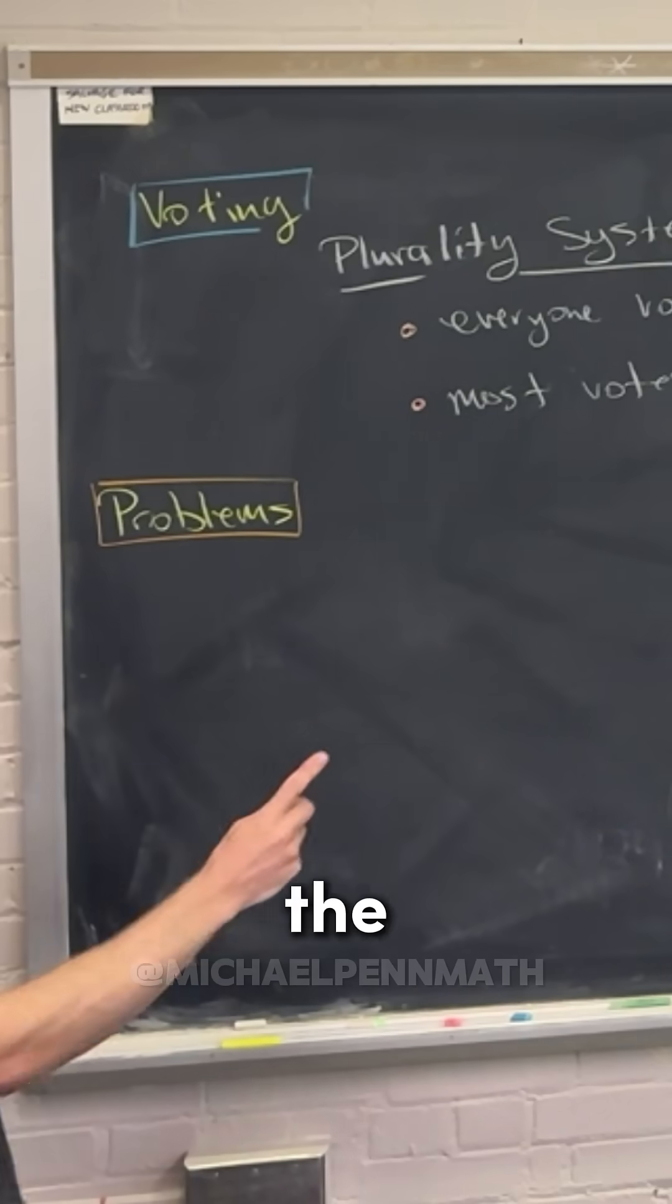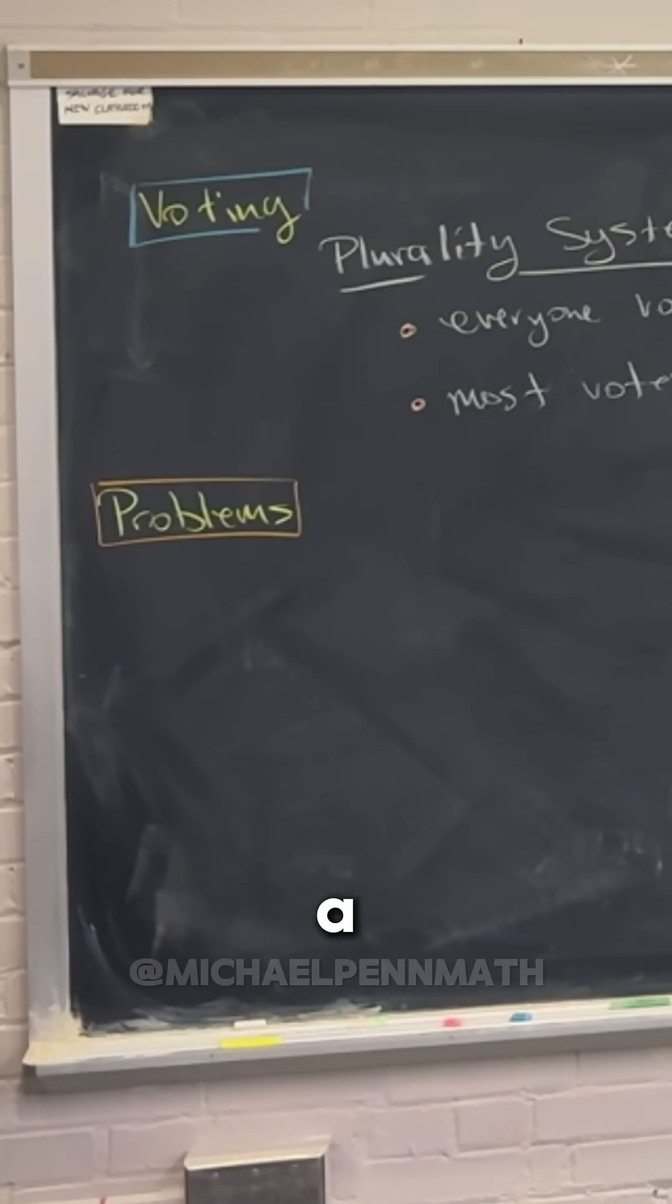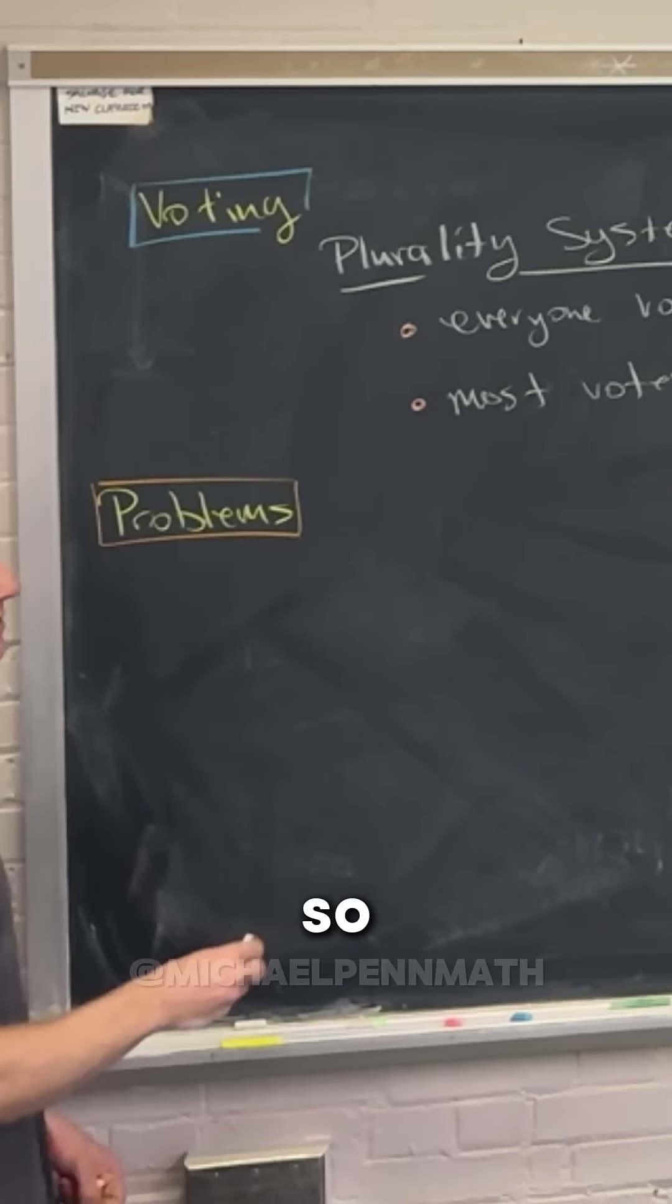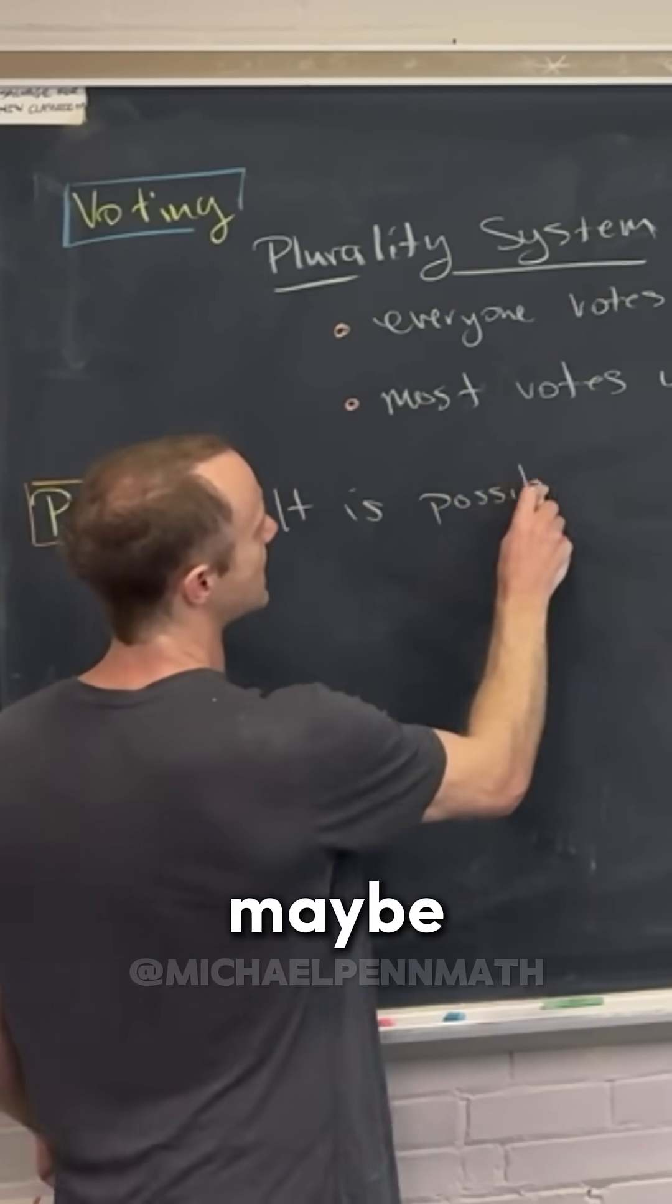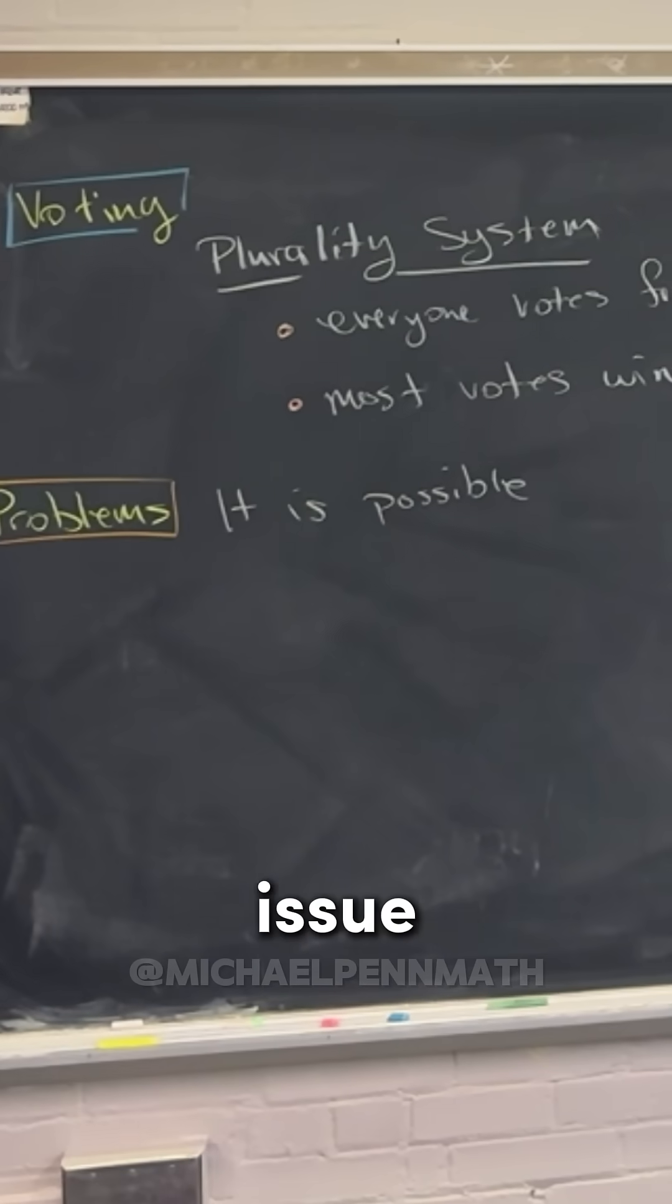So the main problem is that it's possible for a candidate with the most votes to have way less than 50% of the votes, which maybe doesn't seem like a huge issue, but it becomes an issue when a collection of candidates is maybe on one side and then the single candidate that wins is on the other side.